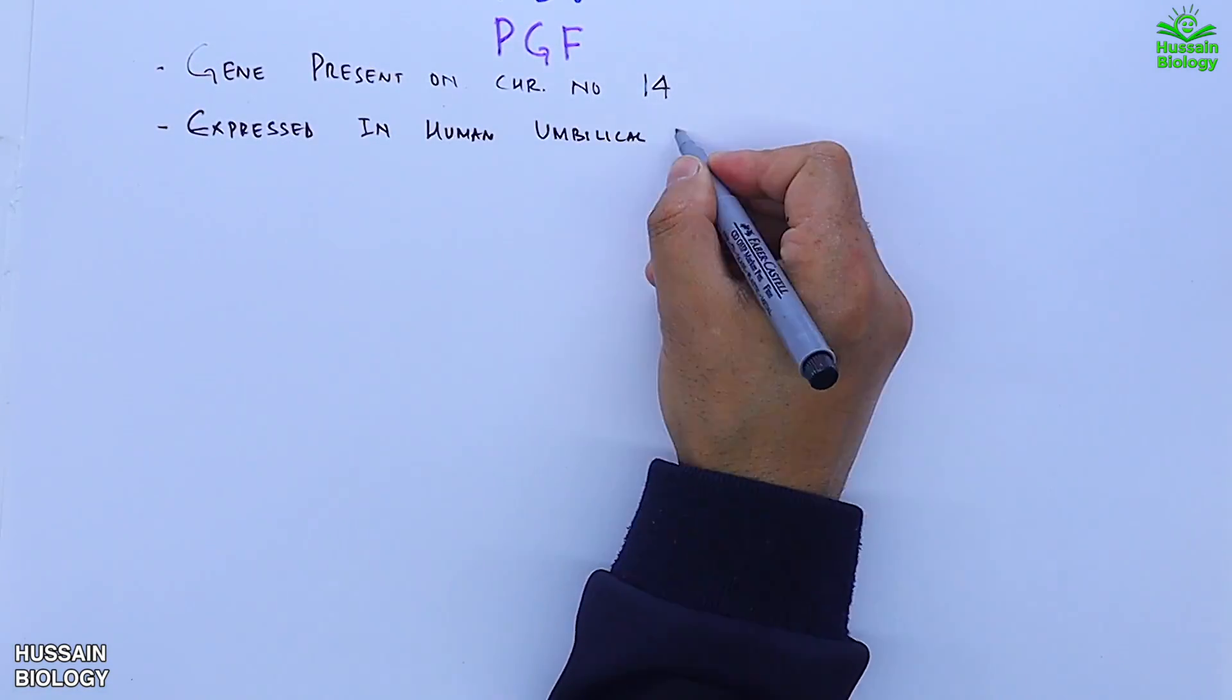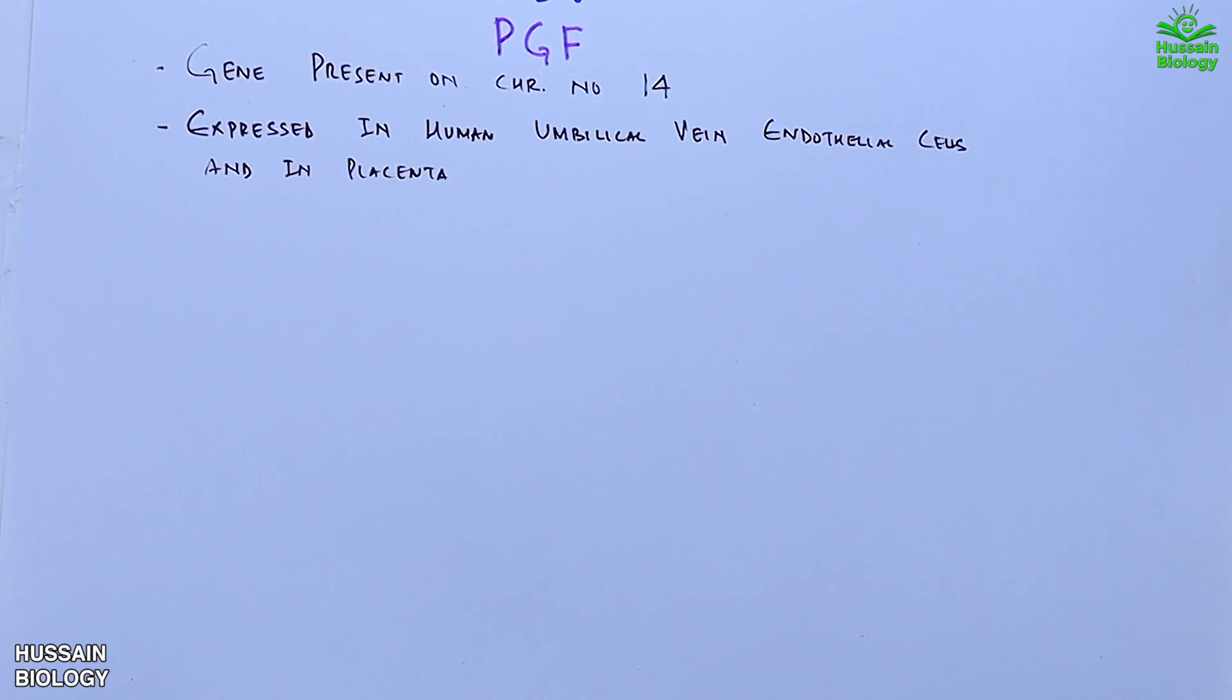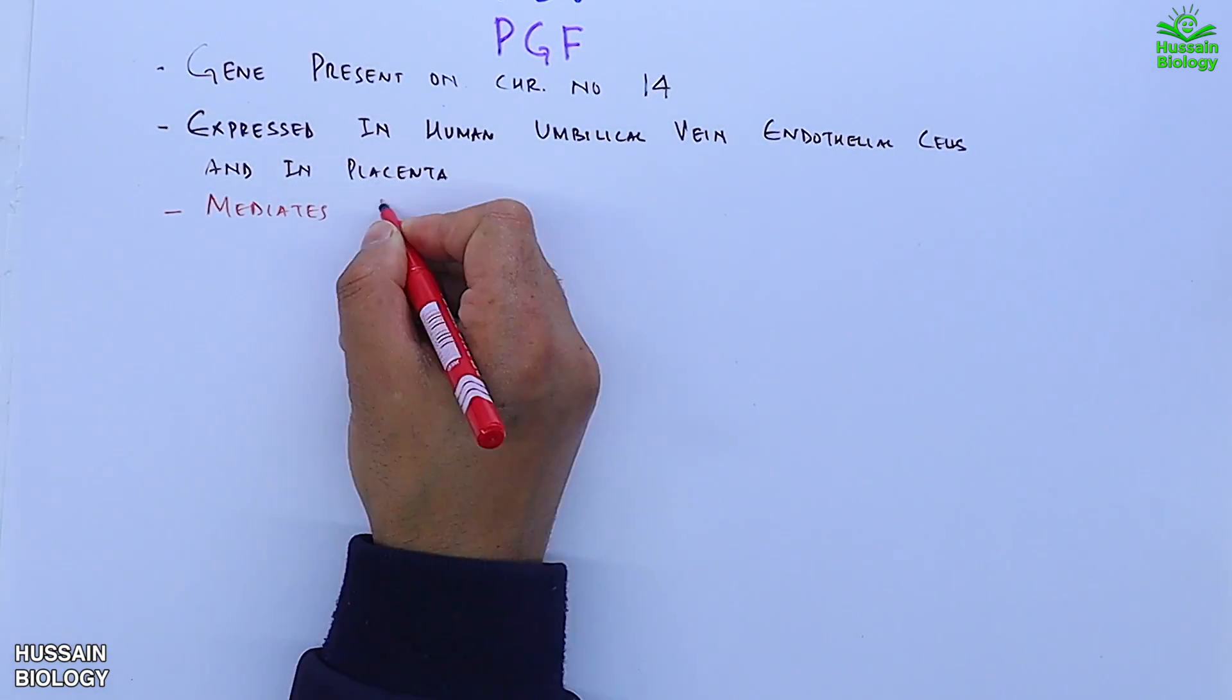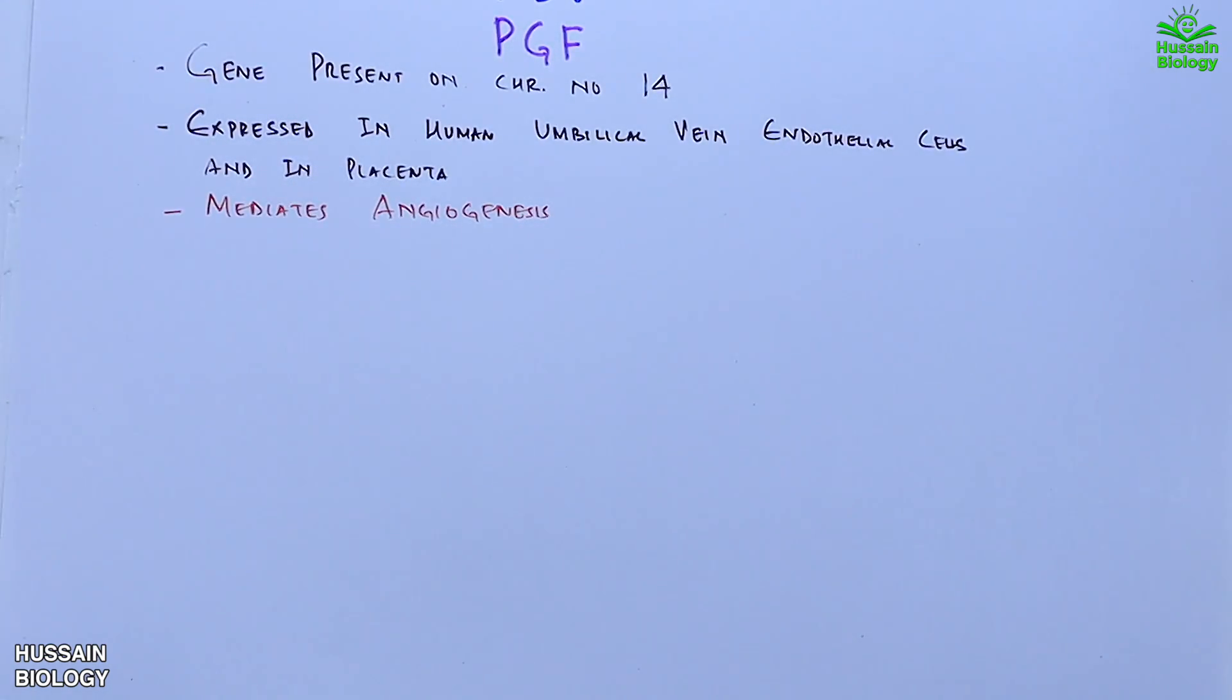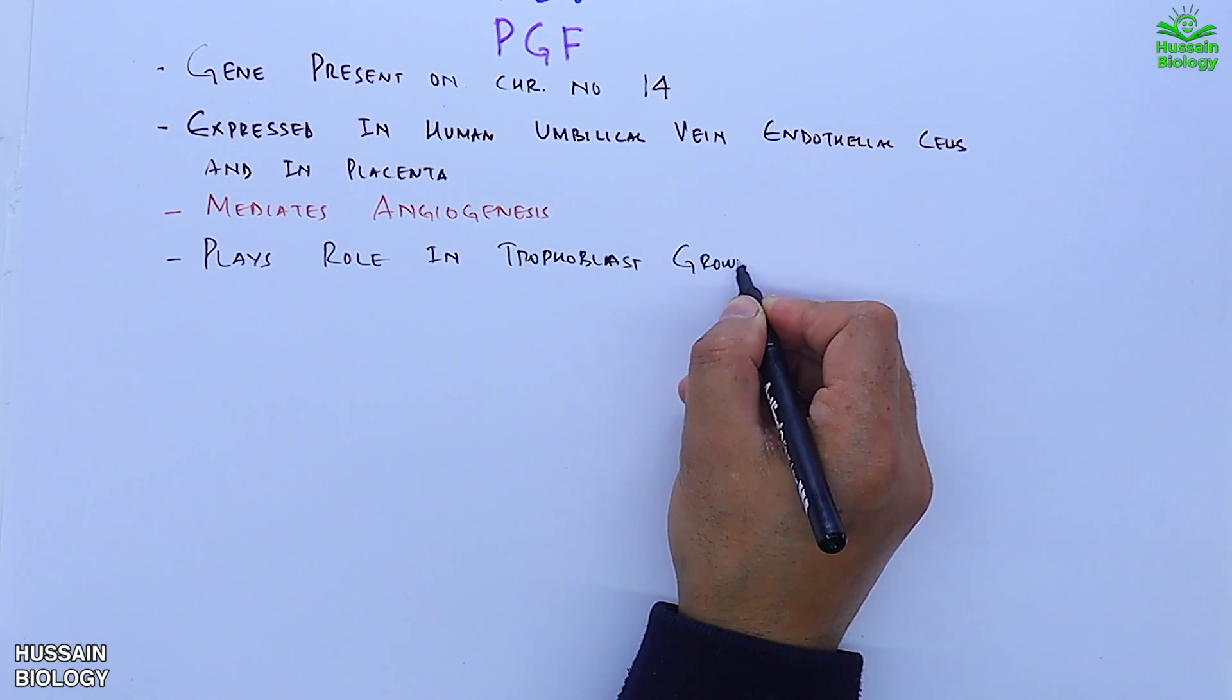Finally, we have PGF. Its gene is present on chromosome number 14. It's expressed in human umbilical vein endothelial cells and in placenta. It mediates angiogenesis like all other factors do, and plays a role in trophoblast growth and differentiation.